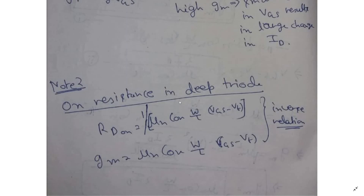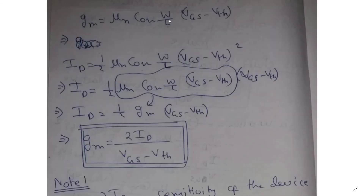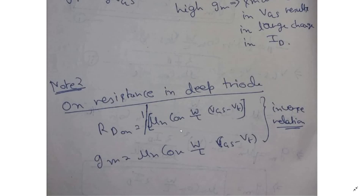Point two is the shortcut to remember the formula of GM. Recall that in the deep triode region MOSFET acts like a voltage-controlled resistor, where Ron = 1 / (μn · Cox · (W/L) · (VGS − VT)). And the GM expression is μn · Cox · (W/L) · (VGS − VT). Do you see the relationship? Ron and GM follow an inverse relationship. So just remember Ron from the triode region, and remember that GM in saturation region is its inverse: 1/Ron = μn · Cox · (W/L) · (VGS − VT).